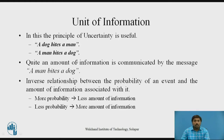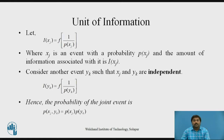Let us express this as an equation. I(xj) equals a function of 1 divided by P(xj), where xj is the event occurring and P(xj) is the probability associated with that event. As stated, the relationship is inverse: the information associated with an event equals the inverse of the probability of that event's occurrence.